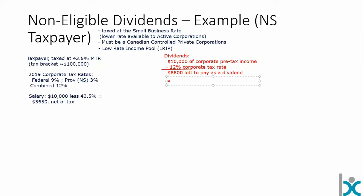As we saw on the last slide, there's also going to be a gross-up here. We're going to have a 15% gross-up. In 2018 that's 16%, but in 2019 that's going to drop to 15%. That leaves us with $10,120 on the T5 — that's what'll show up on that T5 slip. The $8,800 is the real amount; $10,120 is just a notional amount for tax purposes.